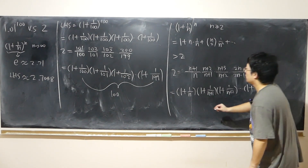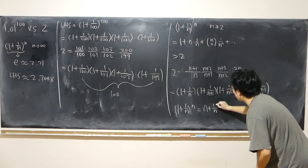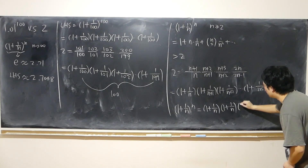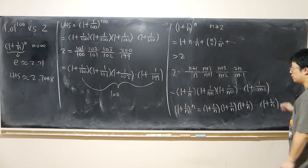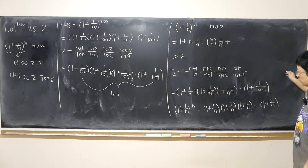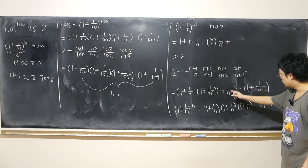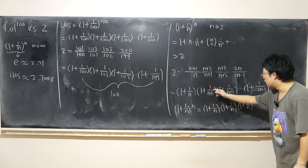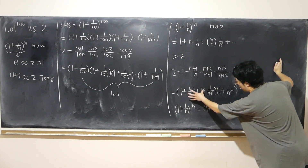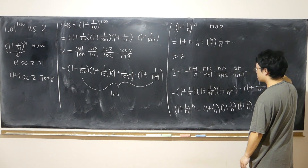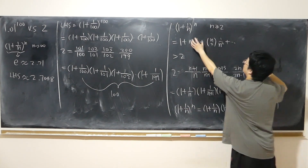And (1 + 1/n)^n is just (1 + 1/n) repeated n times. Each fraction in our expansion of 2 — like 1/(n+1), 1/(n+2) — is a little bit smaller than 1/n. So each bracket of the expansion is smaller, meaning (1 + 1/n)^n is a little bigger than 2.